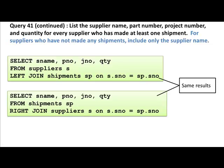But if you put the suppliers table on the right, then it is a right join, because we still want everything from the suppliers table, not from the shipments table. From the suppliers table, whether there is a match or no match, everything must appear. So if we put suppliers on the right-hand side, we say RIGHT JOIN. The results are exactly the same — it just depends on where the name of the table is appearing.